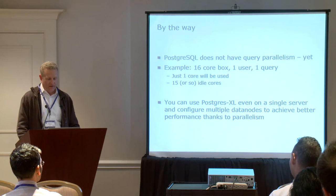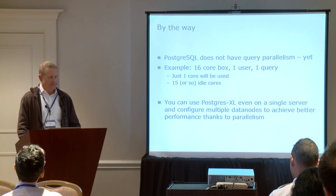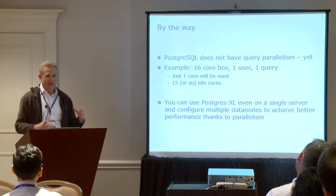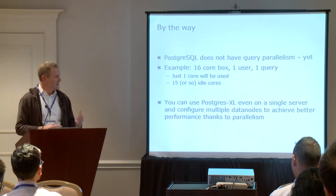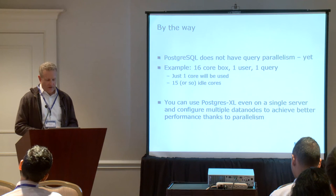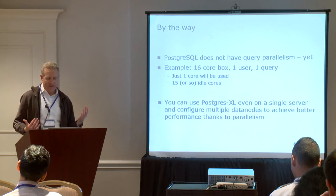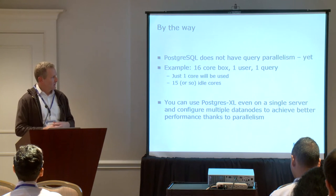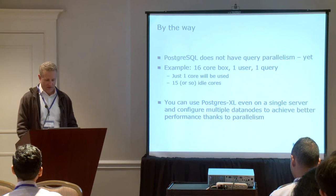In one test I did on an eight-core box, I ran some TPCH-type queries and they were about five times faster. So it's not going to be eight times faster necessarily — there's some sharing of resources: memory, storage, and so on — but you can definitely get a boost taking advantage of having more of those cores available.